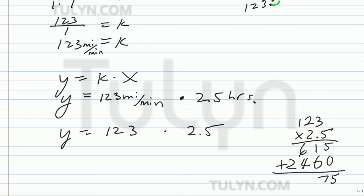Add 5 plus 0 is 5. 1 plus 6 is 7. 6 plus 4 is 10. 0 here. 1 up here. 1 plus 2 is 3. How many decimal places in your multiplicand? 1 here. So 1 over here. So then y equals 307.5 miles.